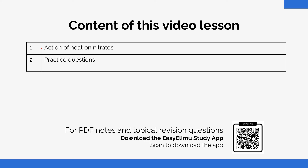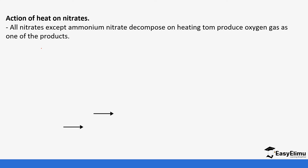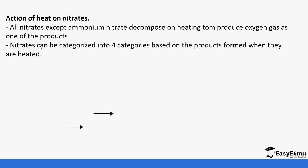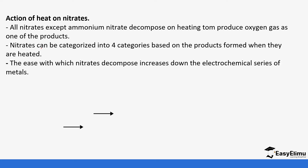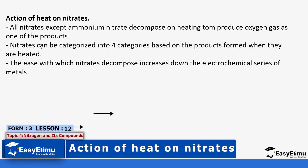We'll look at the action of heat on different nitrates and then do a few questions. All nitrates except ammonium nitrate decompose on heating to produce oxygen gas as one of the products. Nitrates can be categorized into four categories based on the products formed when they are heated. The ease with which nitrates decompose increases down the electrochemical series of metals.